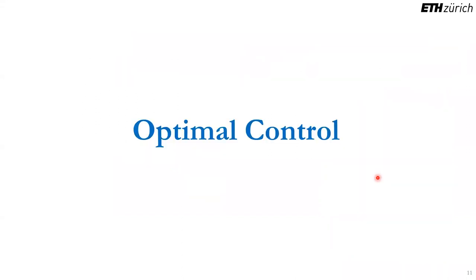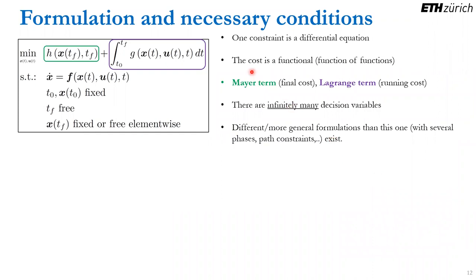With that, we conclude the first part of the tutorial and now start talking about optimal control. So far, optimization problems had a finite set of decision variables. In an optimal control problem, that changes — we are minimizing over trajectories or functions in general, which means infinitely many decision variables. Another important difference is that one of the constraints is a differential equation describing the dynamics of a robot, plus constraints on initial and final states.